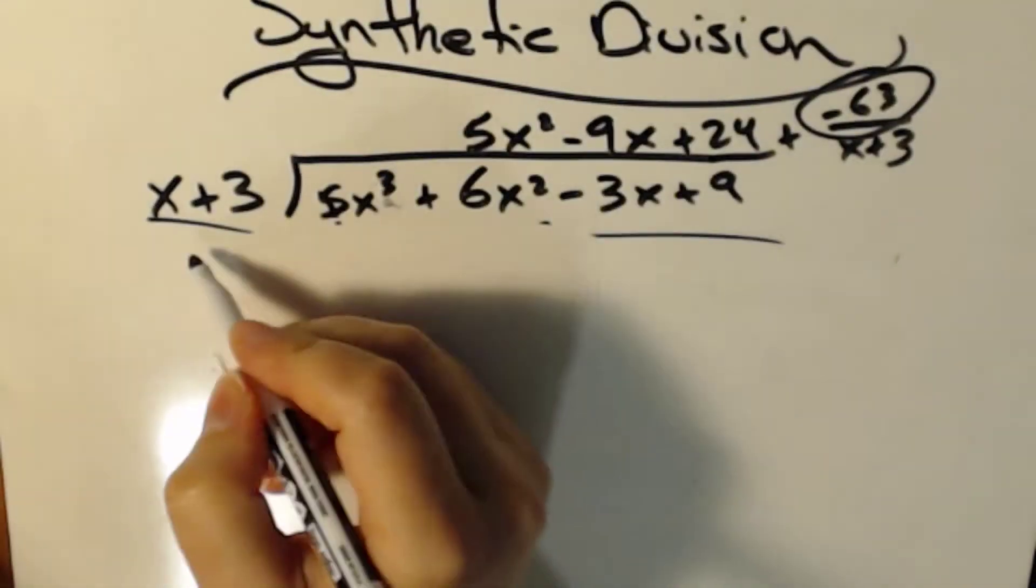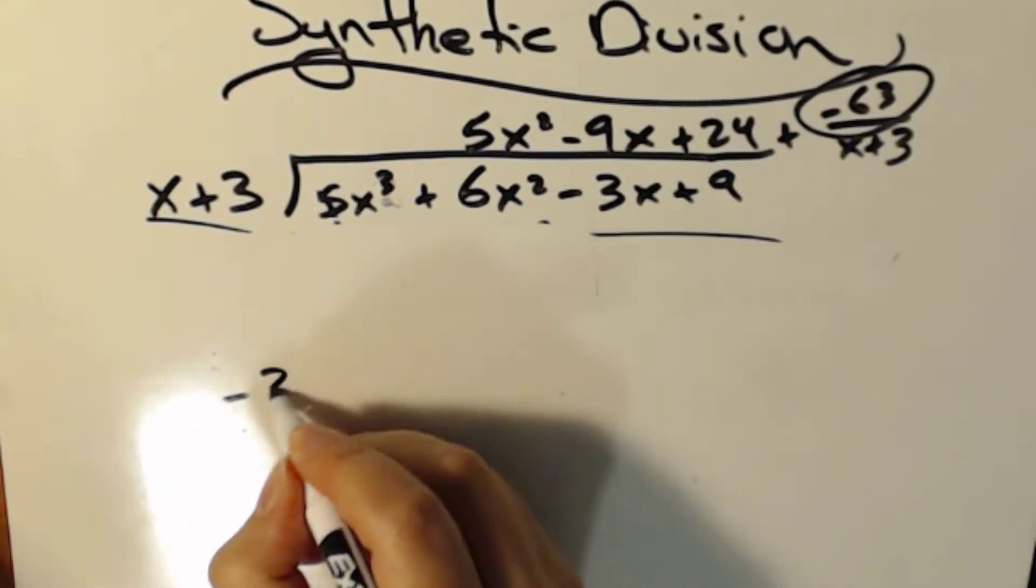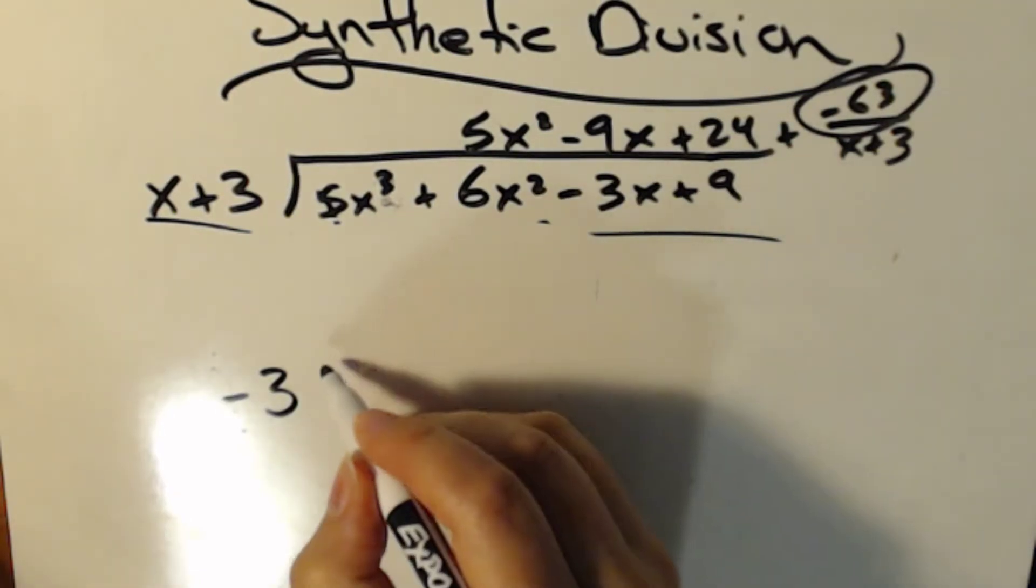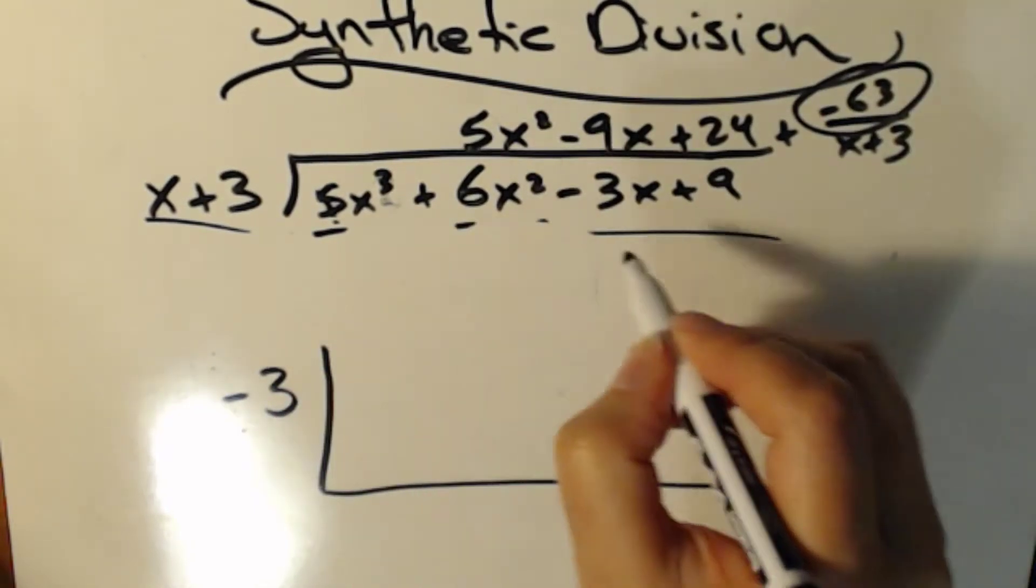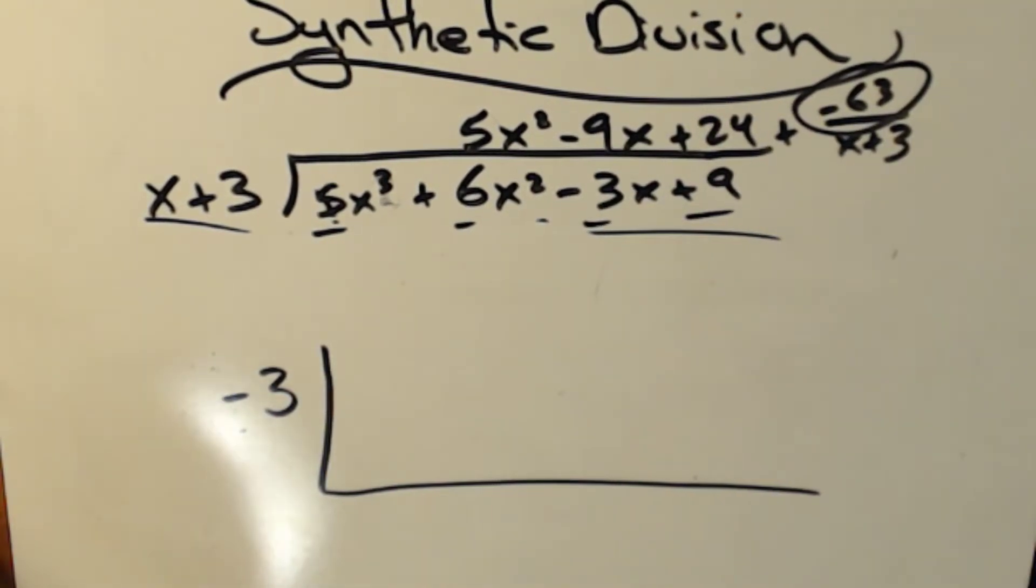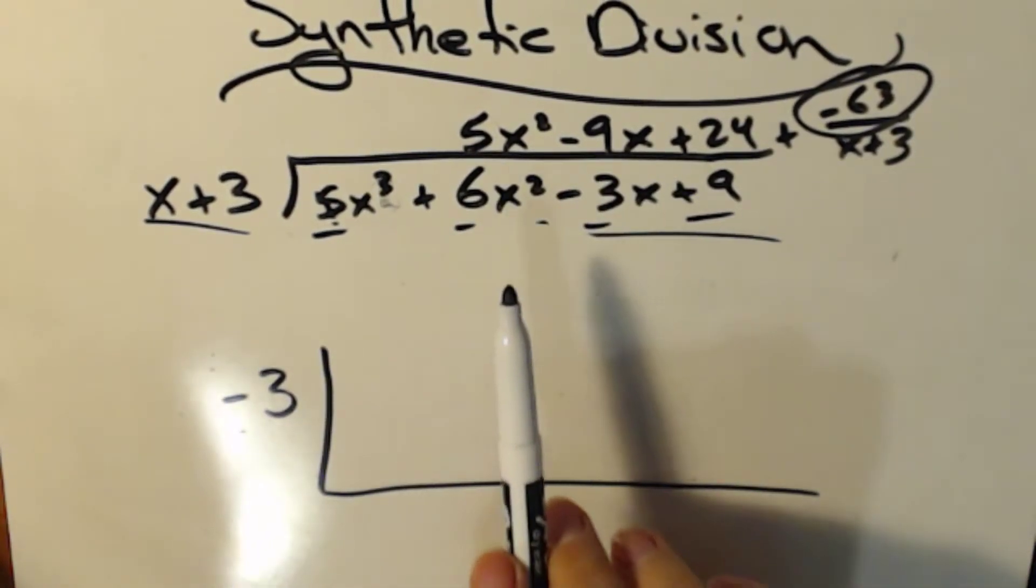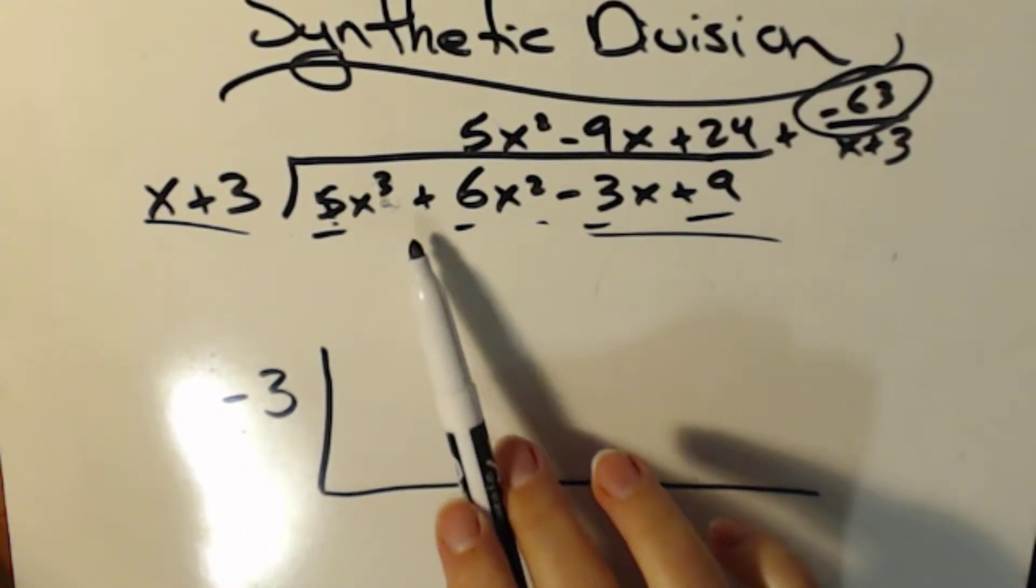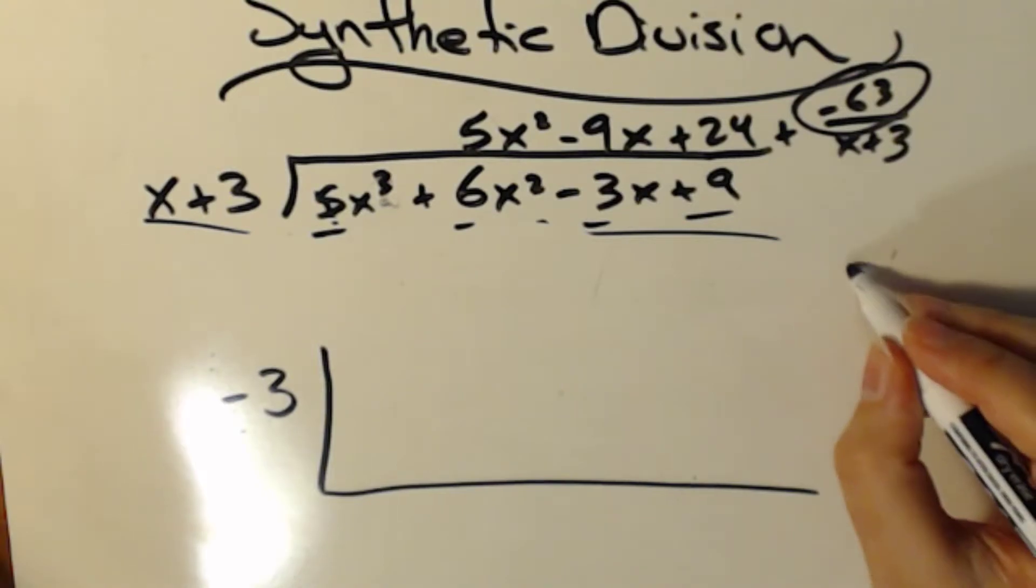So the first thing I'm going to do is I'm going to set up my synthetic division box or workspace, whatever you want to call it. So if I have x plus 3 is what I'm dividing, I'm going to change the sign. So this is a plus 3. I'm going to make it minus 3. And I'm going to just put that outside of a little box thing.